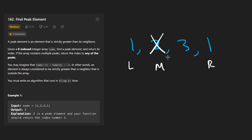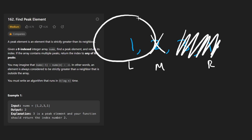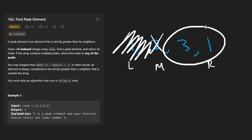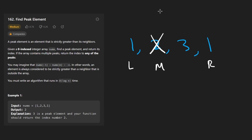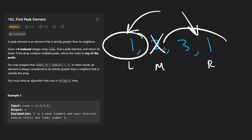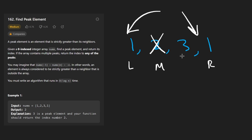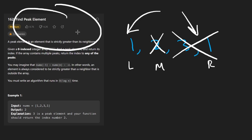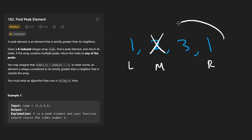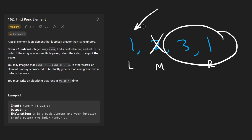The idea behind binary search is that we should be able to eliminate half the search space every time — say there's no solution on this side, search on the other side. But we can't really say that definitively here, since there could be a solution on either side or both sides. So this is going to be a modified binary search where we don't necessarily eliminate half the search space every time. We just have to be sure that the side we decide to search on does have a peak element.